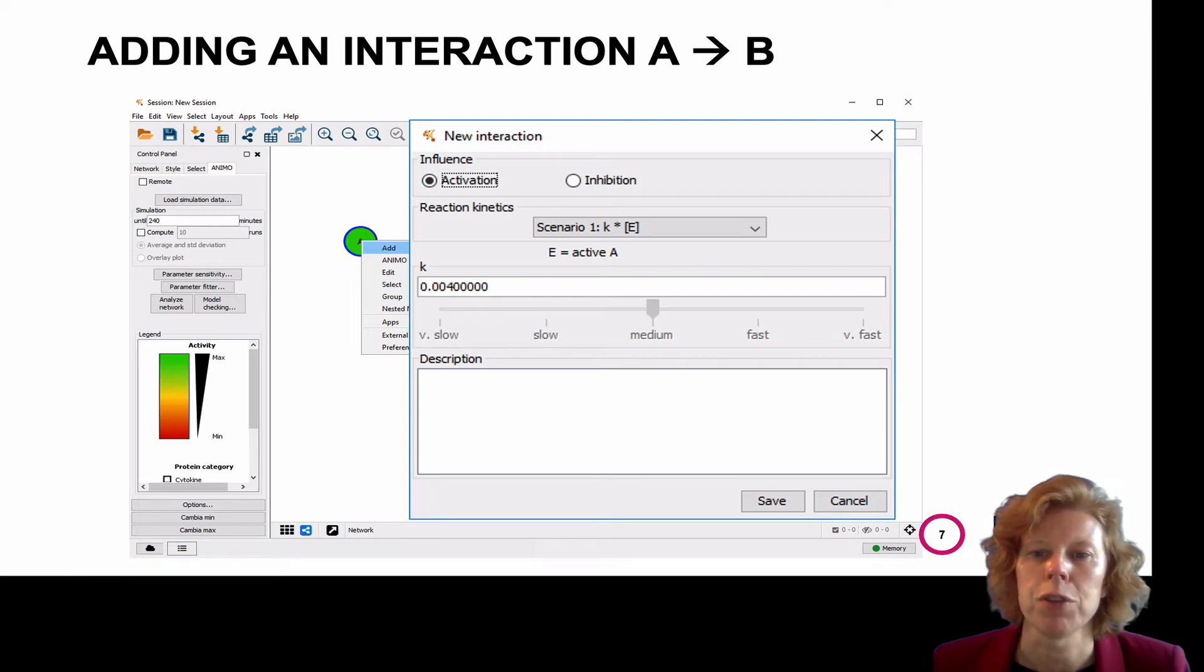And you choose your K value. If you know the K value of the interaction, you can type this in the window. But if you don't know the K value, you can use the slider to choose from very slow, in the case of gene transcription and translation, or fast or very fast, in the case of ligand receptor binding, post-translational modifications, for example, phosphorylation, dephosphorylation.